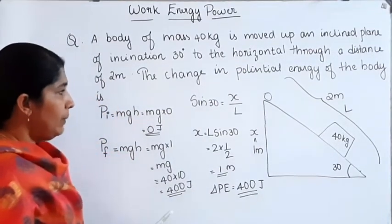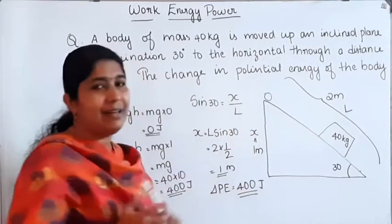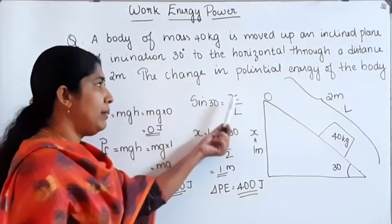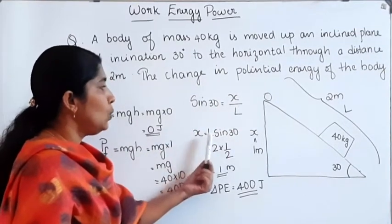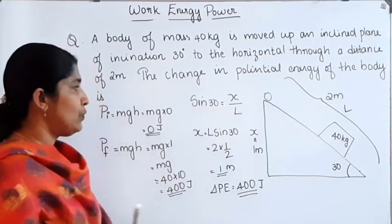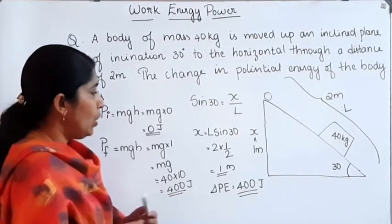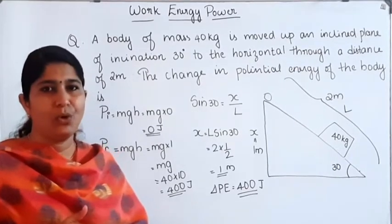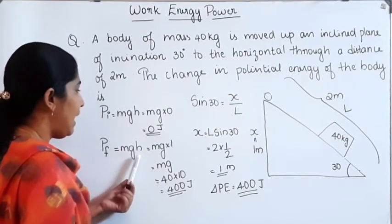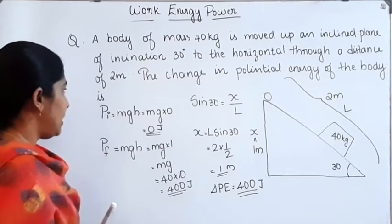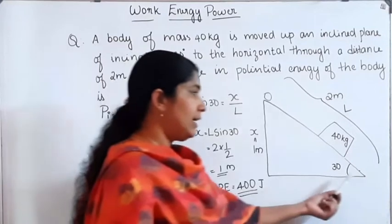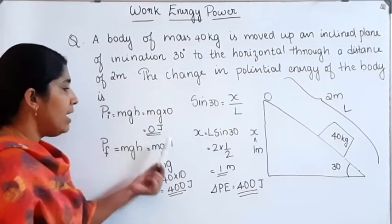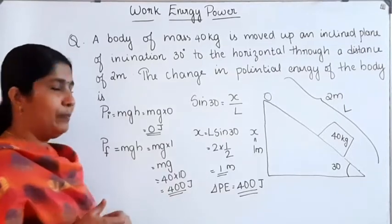To summarize the solution: we first found the height of the inclined plane using trigonometry — sine 30 equals X over L, so X equals L × sine 30 equals 2 × 1/2 equals 1 meter. Initial height is 0 and final height is 1 meter, so the change in potential energy is 400 Joule.